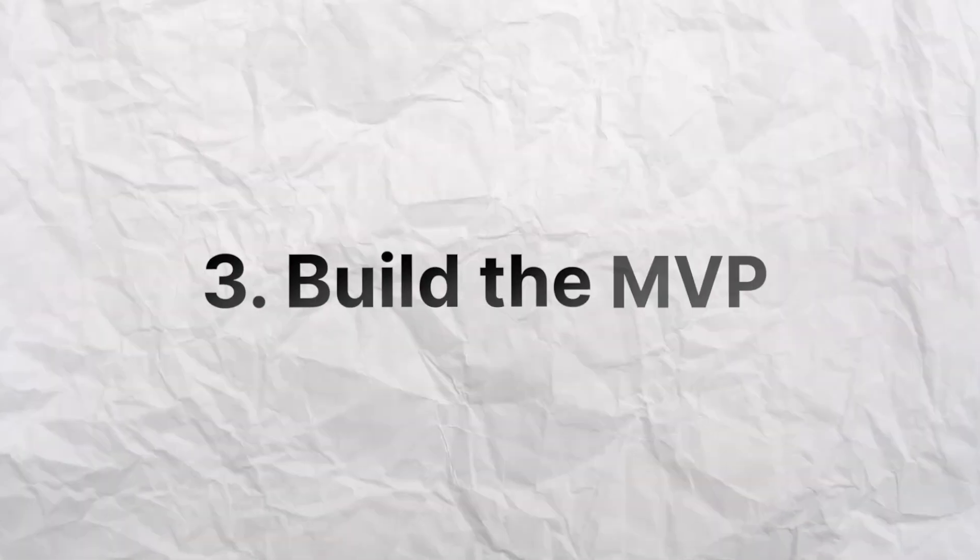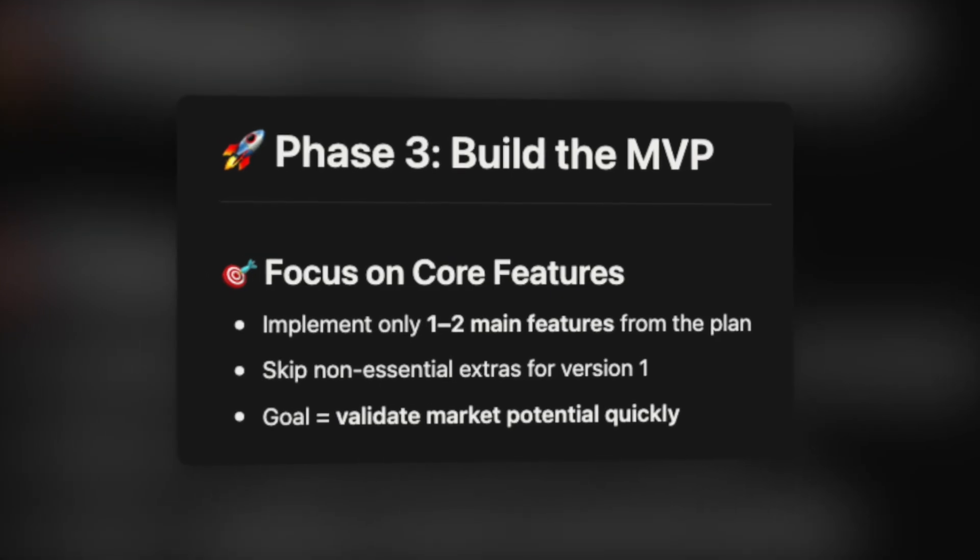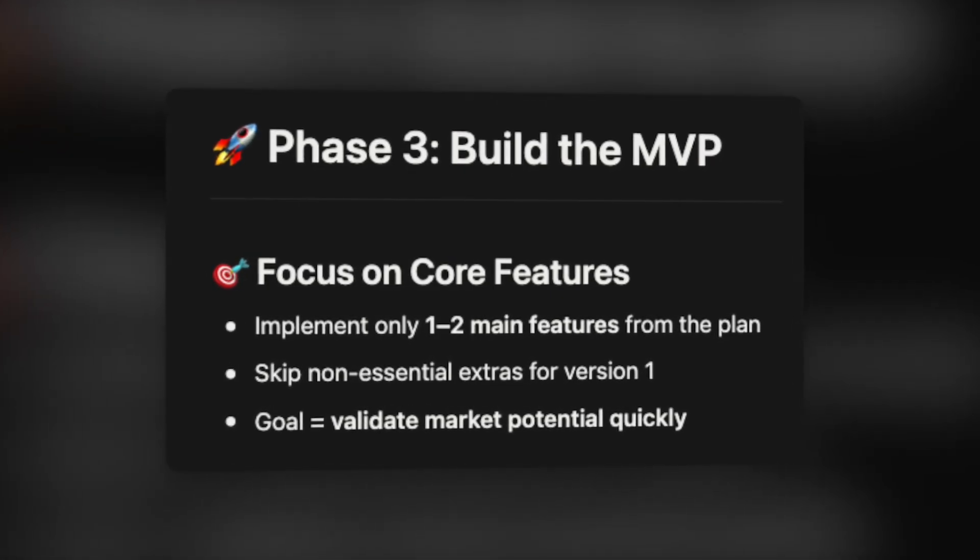Phase three is building the MVP. Now that you have a plan based on your researched keywords, go ahead and implement the main one or two features. Try to prioritize and cut down on things that aren't important for version one, because you can always come back and improve the application. What you're trying to do now is validate whether an application like this is going to have potential on the market, so focus on what's important now and improve later.